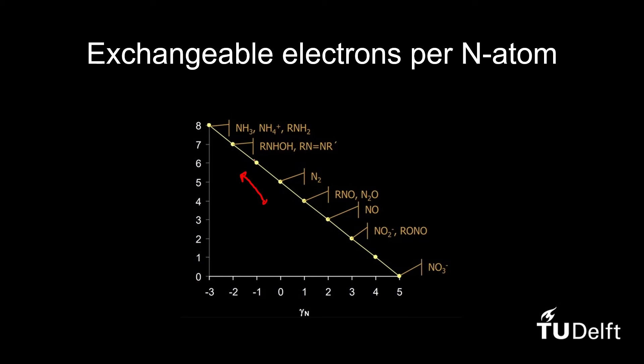If we are moving downwards in the graph, it means that the amount of exchangeable electrons decreases. This does mean that the compound is oxidized.